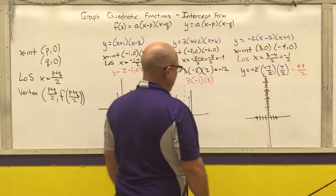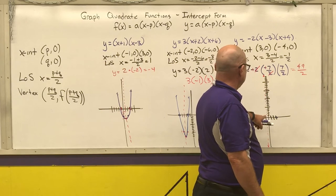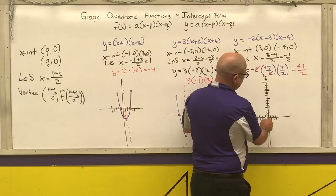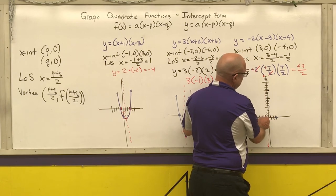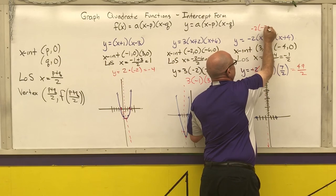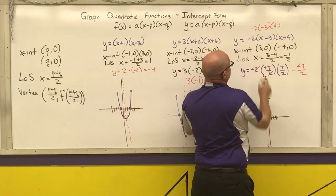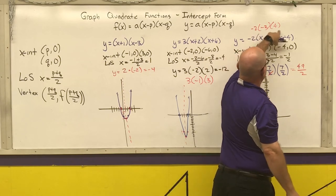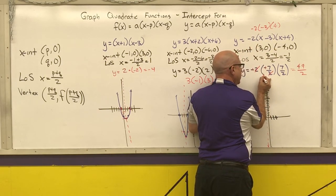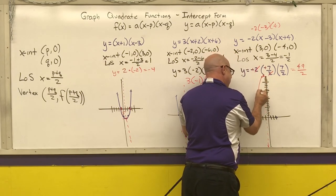And I need one more point. So we can put a 0 into our function. And a 0 would give us this point and this point. So if I put a 0 in here, I get negative 2 times negative 3 times 4. That would be 6 times 4 is 24. So really close here. And then it shoots down.